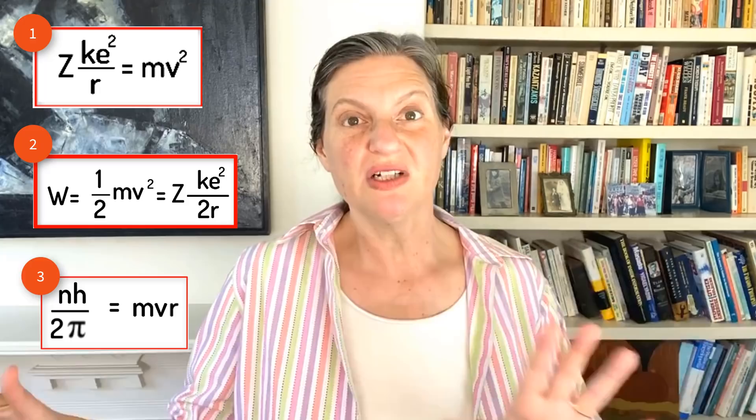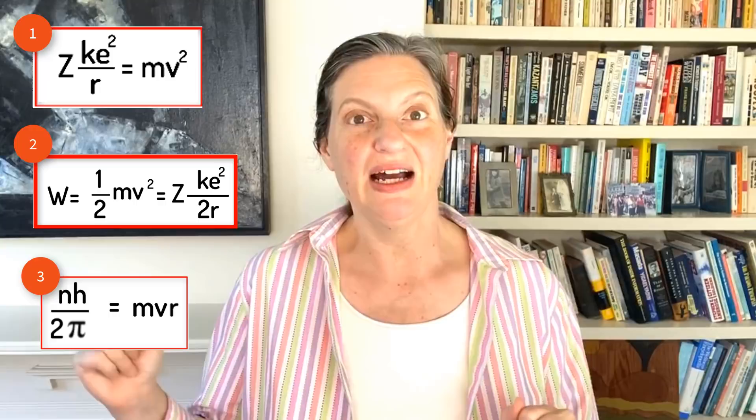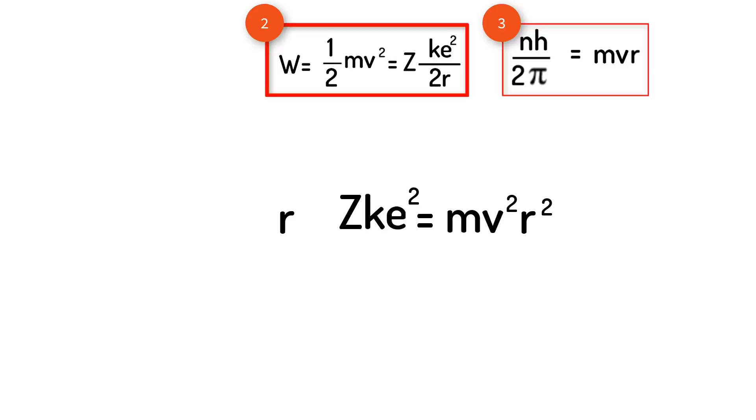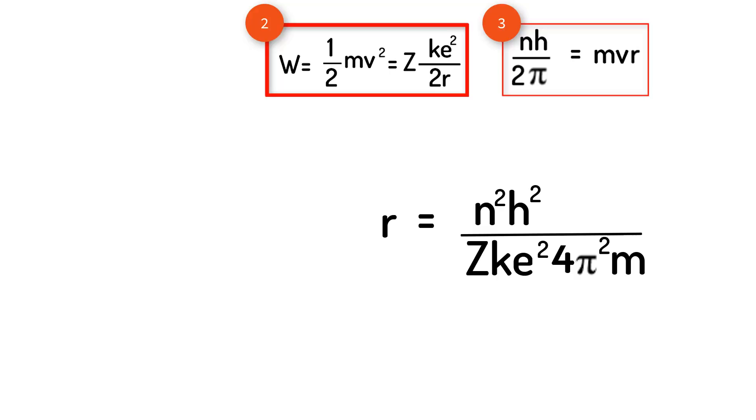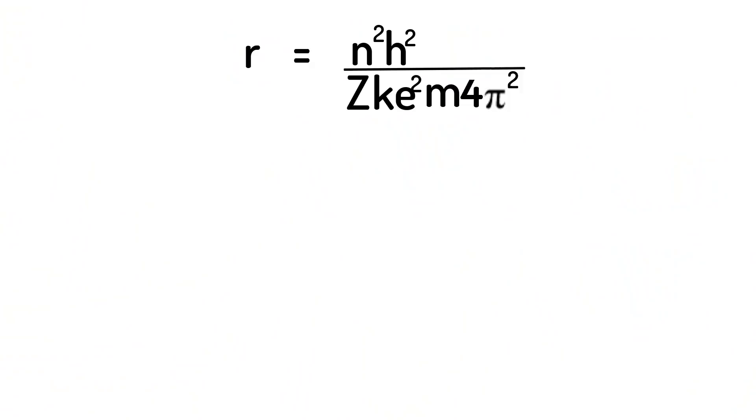Now we're ready to get to the results. First, we're going to solve for the possible positions of the electron, i.e., the allowed radii. Let us start with equation one, multiply both sides by r², then divide both sides by Zke². Finally, multiply the right side by m over m. The numerator is the angular momentum MVR squared, which using equation three can be replaced with nh over 2π squared, to get r equals n²h² over 4π²kZe²m.